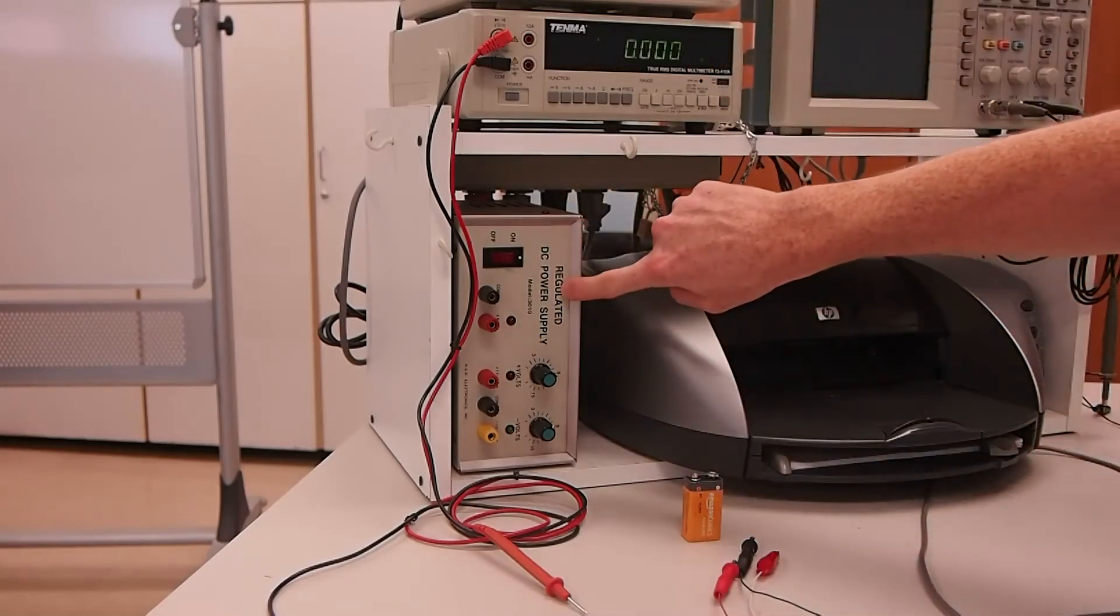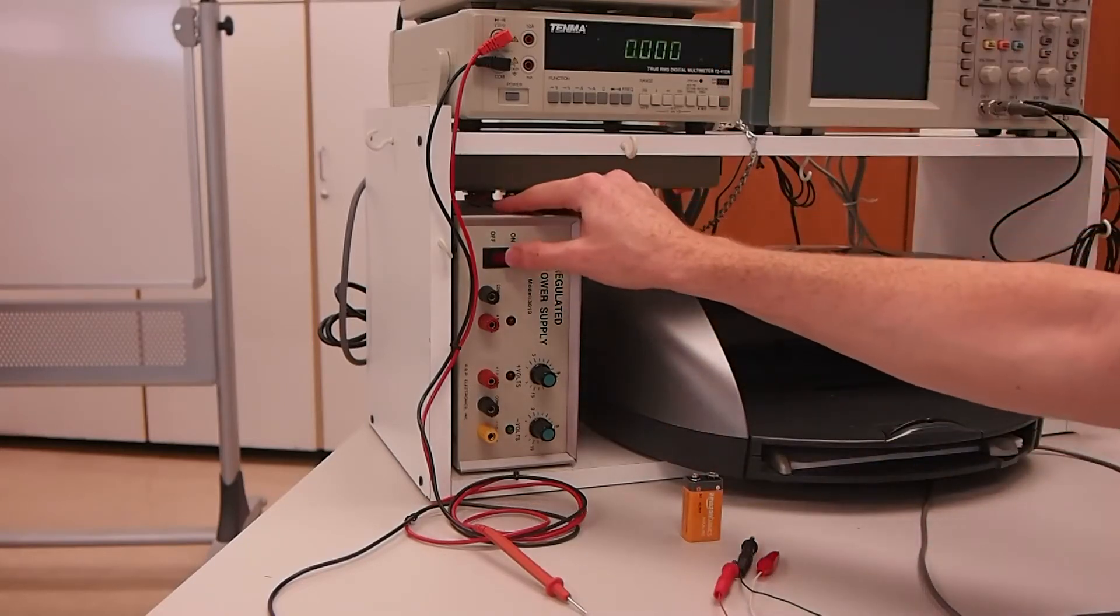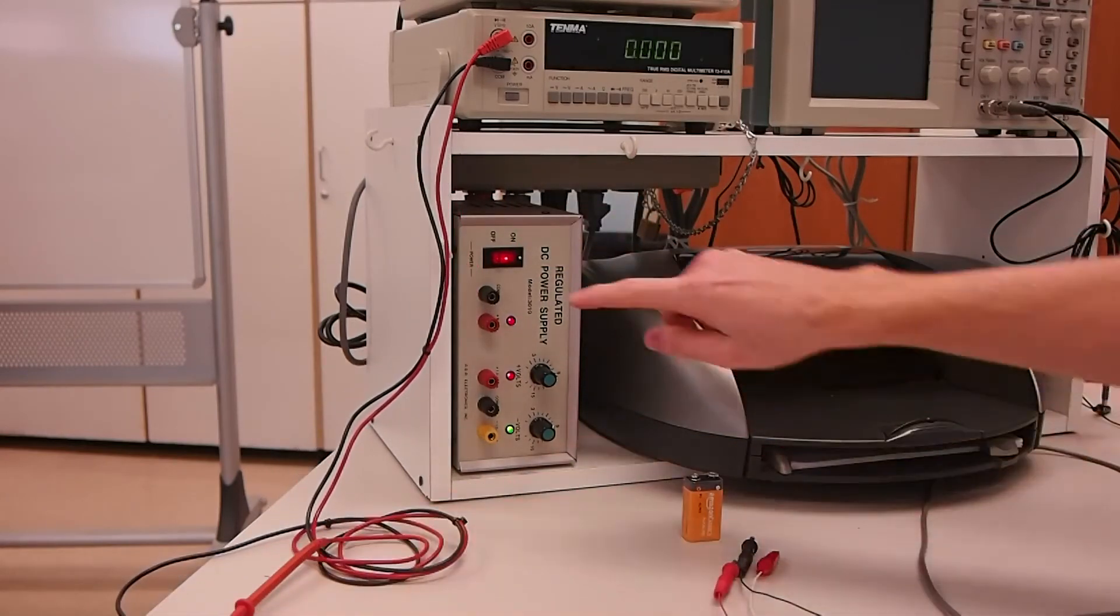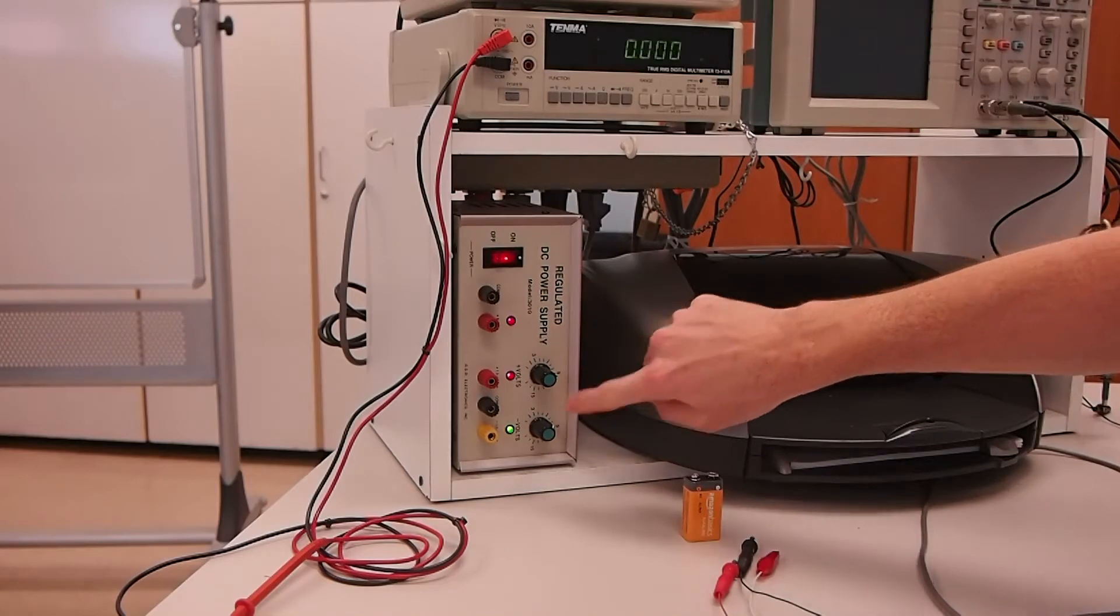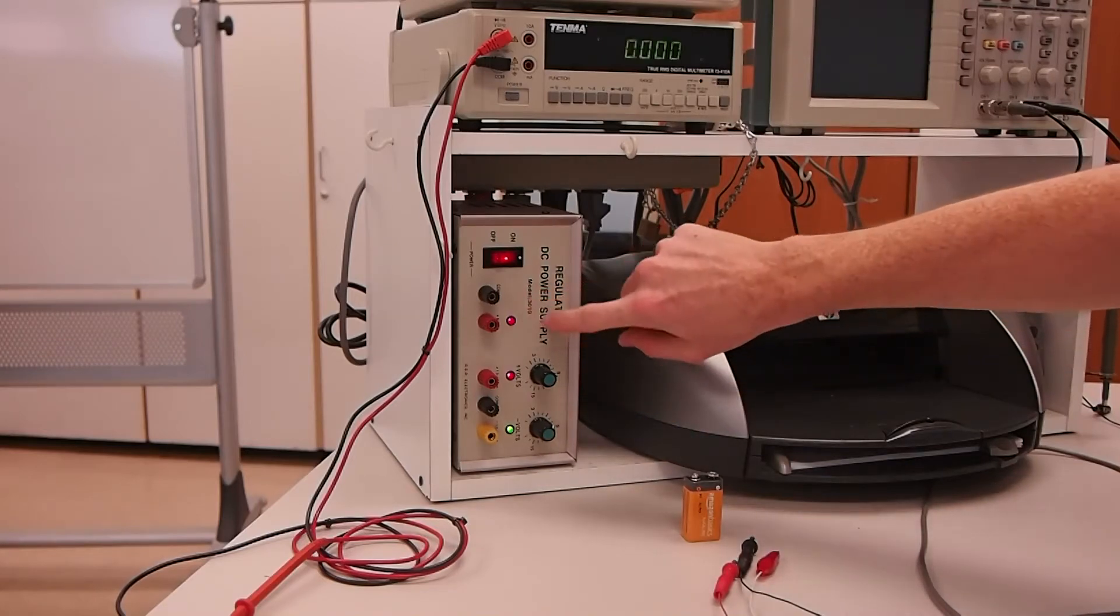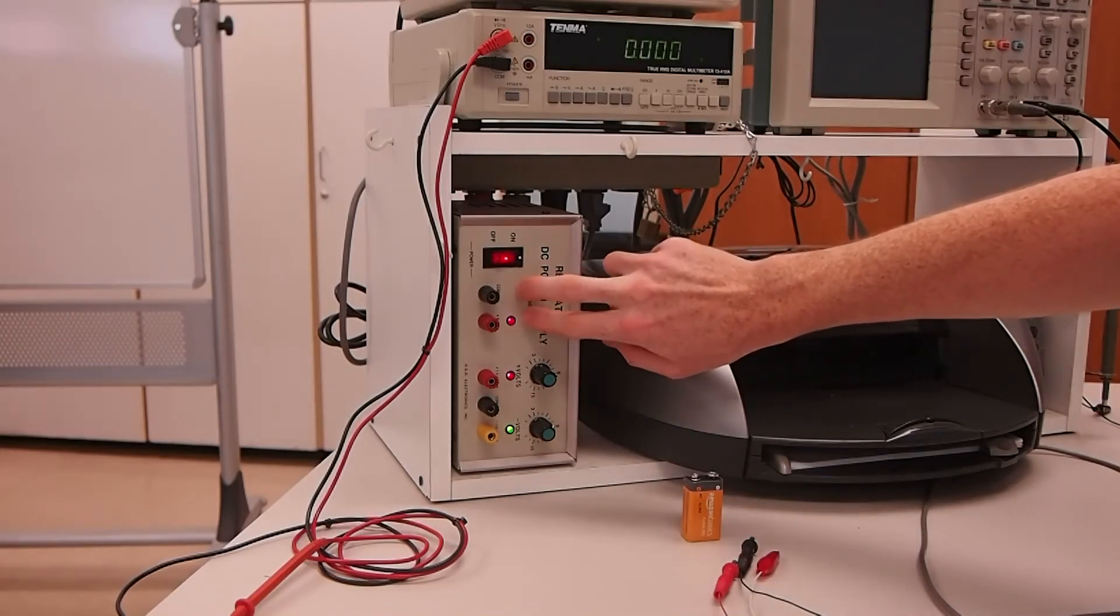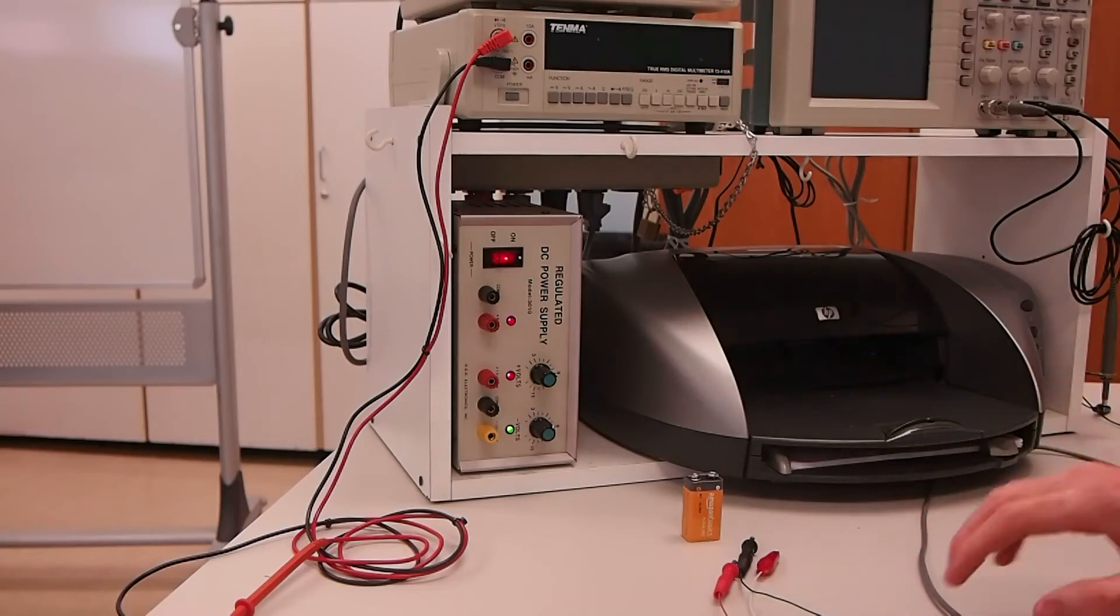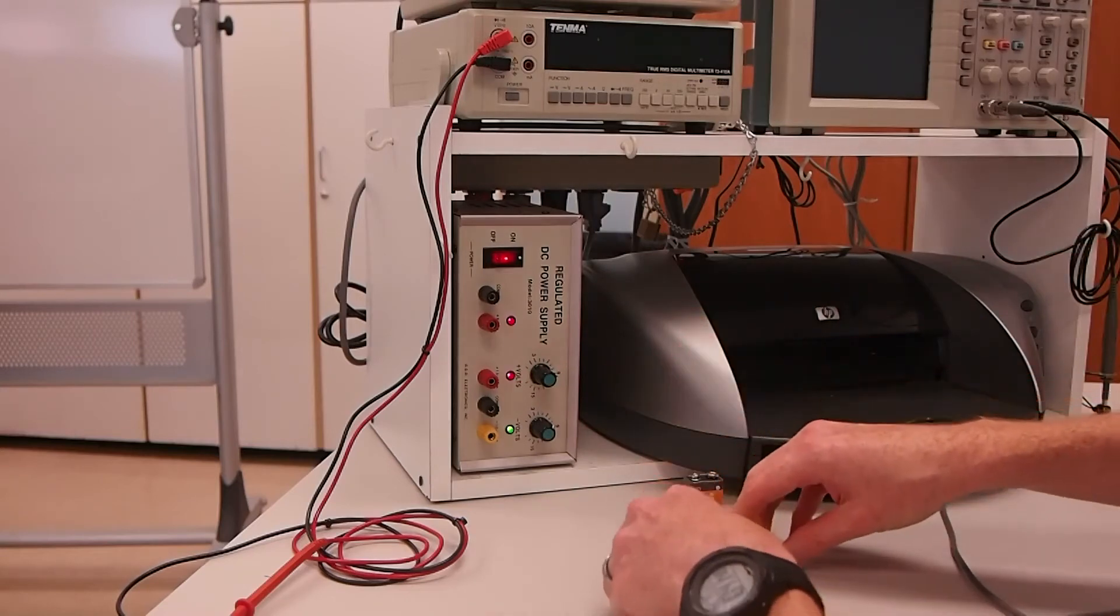Second is the DC power supply. So we can go ahead and turn it on as well. It has two setups here, so there is a 5 volt fixed power supply, and there is a variable power supply option between 1.5 and 15 volts. So let's go ahead and use the variable power supply.